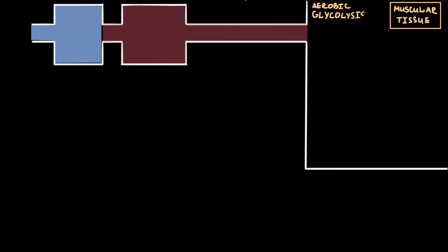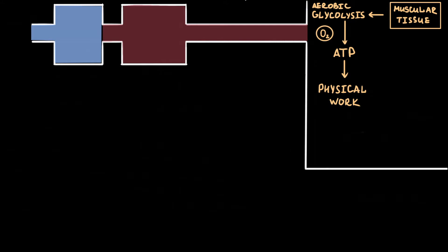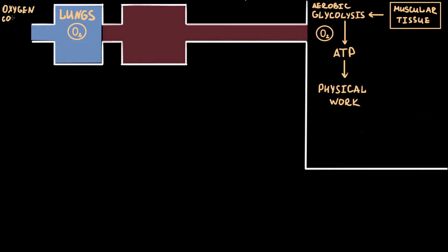For performing physical work, our muscle tissue uses ATP that was created during aerobic glycolysis. Aerobic glycolysis is a much more efficient way of ATP production than anaerobic. Therefore, for muscular work we need enough oxygen for effective ATP production. For estimation of oxygen uptake, we use the concept of oxygen consumption, or VO2.